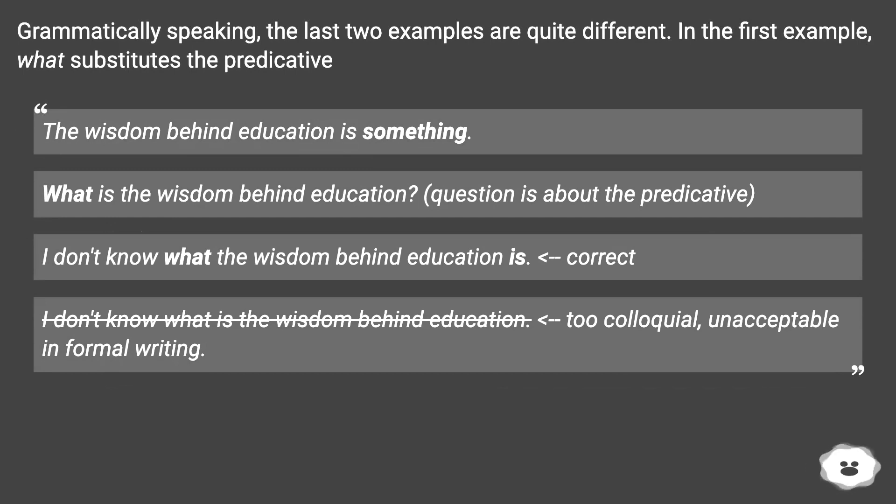Grammatically speaking, the last two examples are quite different. In the first example, what substitutes the predicative. The wisdom behind education is something. What is the wisdom behind education? Question is about the predicative. I don't know what the wisdom behind education is. Correct. Too colloquial, unacceptable in formal writing.